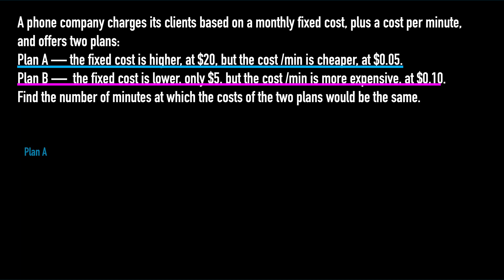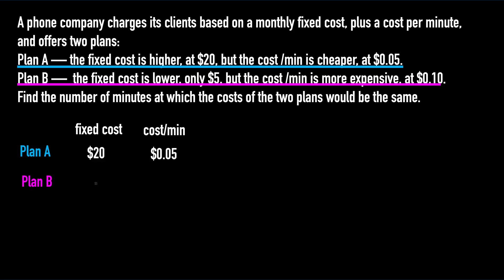Plan A: the fixed cost is $20, and the cost per minute is $0.05. Plan B: the fixed cost is $5, and the cost per minute is $0.10.